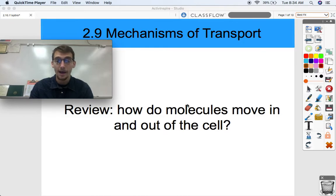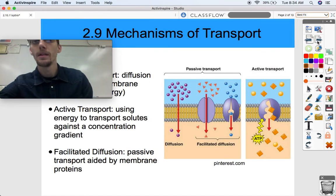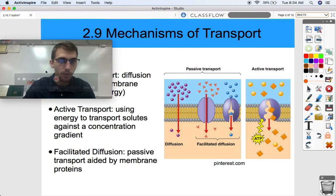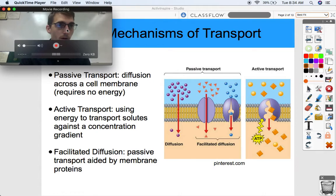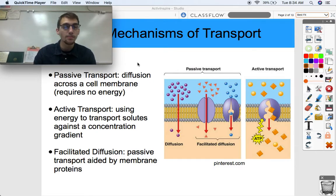Let's review how do molecules move in and out of the cell. We got three main ways. As we might already know, we have passive transport, which is simply diffusion across the cell membrane and requires no energy. Then we have active transport, using molecules to transport solutes against a concentration gradient. And finally, facilitated diffusion, which is passive transport but aided by membrane proteins. We've got a picture of each over here.